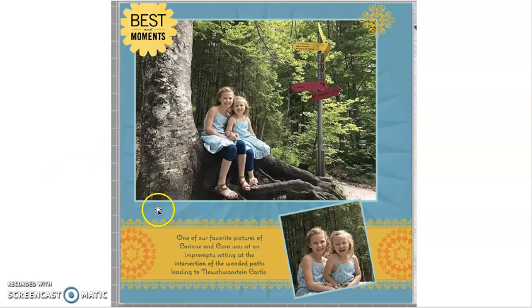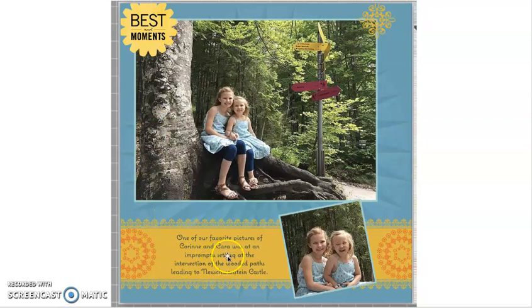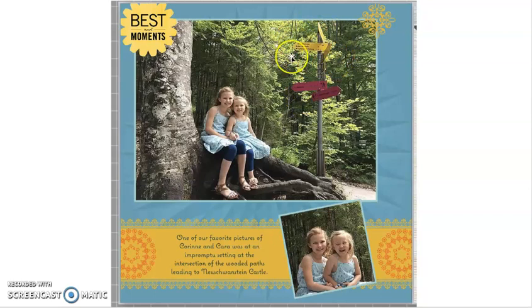Moving on to photo page number seven. This is another photobook page that I created a recipe video on, so if you are a Shutterfly fan, be sure to watch that so you can create a page using these very elements. Let's talk about the aesthetics of this page. Are these colors from the photo environment, people, or contrast? It's primarily people, because the girls are wearing blue dresses, but there is also a yellow sign that gives us some color. Looking at the embellishments, we have some scrolling and floral stickers, which complement the girl subjects nicely.